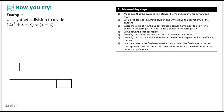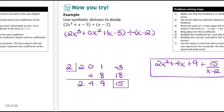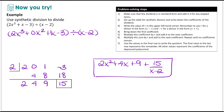Pause and try this example on your own. The dividend is in standard form but missing the x squared term, so add 0x squared. The coefficients with coefficient of 1 included are: 2, 0, 1, negative 3. Since the divisor is x minus 2, r is 2. Bring down 2; 2 times 2 is 4; 4 plus 0 is 4; 4 times 2 is 8; 8 plus 1 is 9; 9 times 2 is 18; 18 minus 3 is 15. Remainder is 15. The answer is 2x squared plus 4x plus 9 plus 15 over (x minus 2).